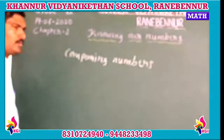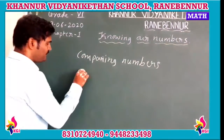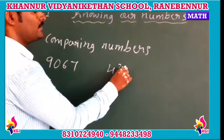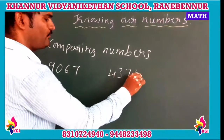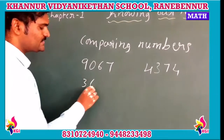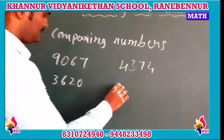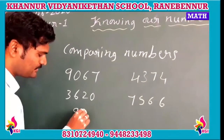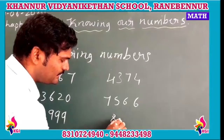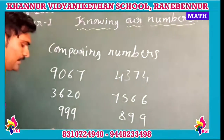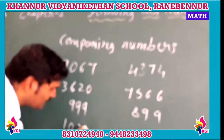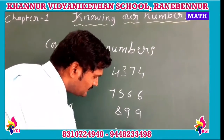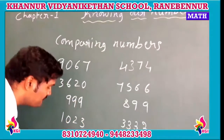Comparing numbers. I am writing some numbers here: 9067, 4374, 3620, 7566, 9999, 899, 1023, 3333, and 678. These are the numbers we are going to compare.